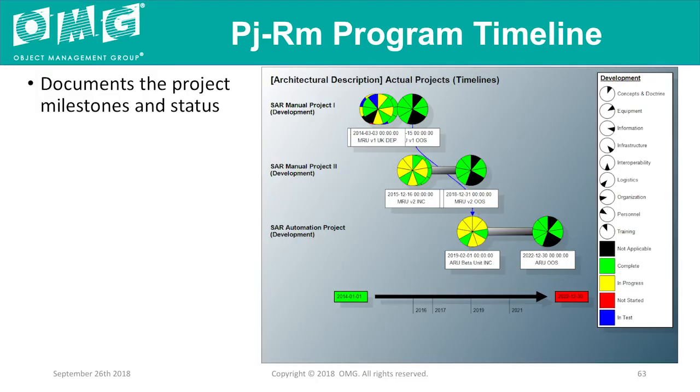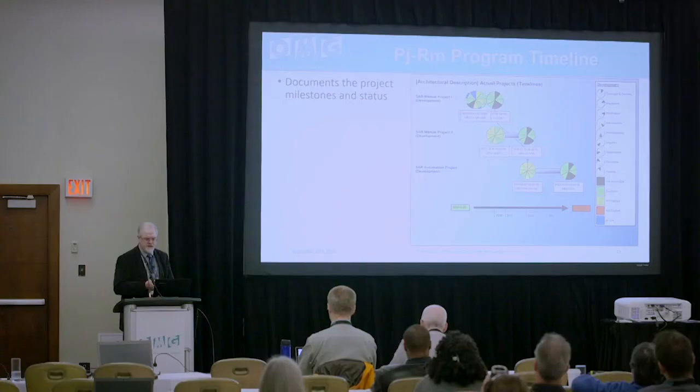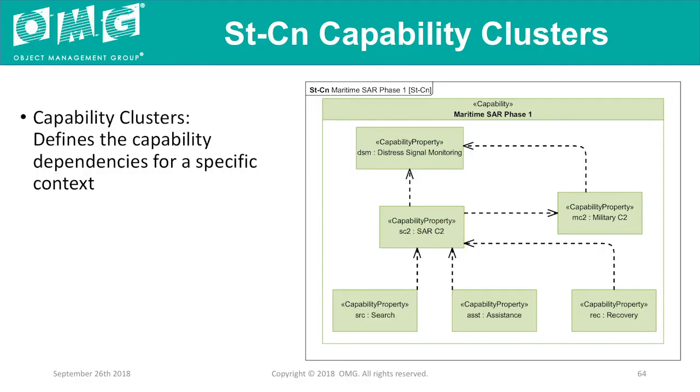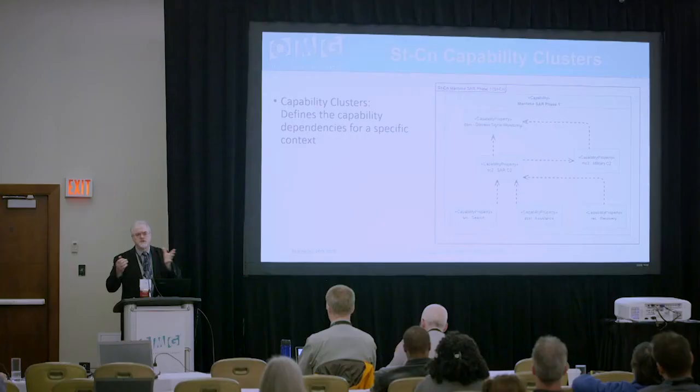This is the project schedule view showing different milestones. Each milestone is associated with a responsible person and project, and you can have different types of milestones such as actual milestones — deploy, something has occurred, systems deployed, systems removed from service, maintenance, updates, etc. For the capability clusters views, I can say for SAR Phase 1 — what capabilities are part of it? Then show SAR Phase 2 with new capabilities, SAR Phase 3, and so on. I can also show what capabilities are needed for land SAR versus maritime SAR — some in common, but with different supporting systems.